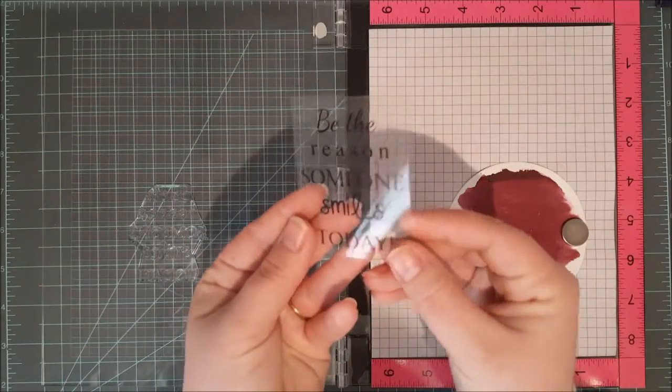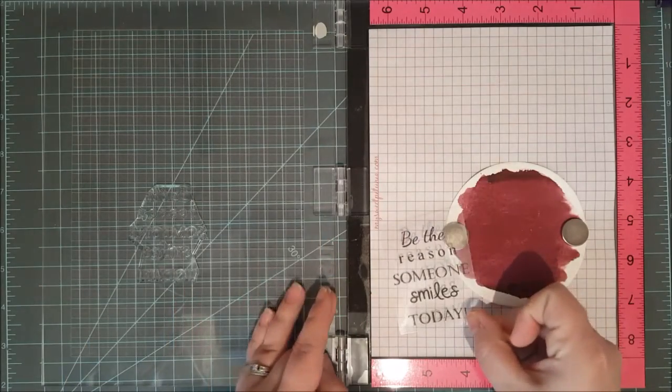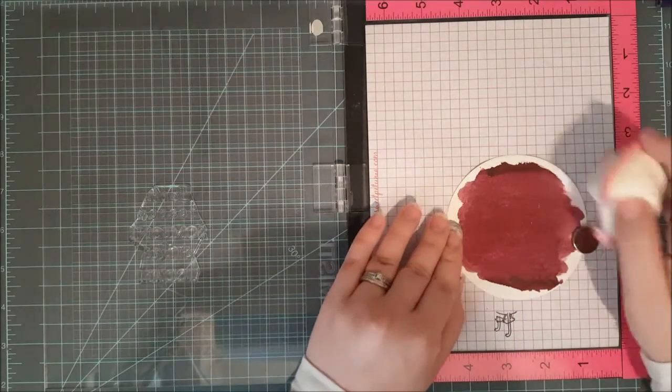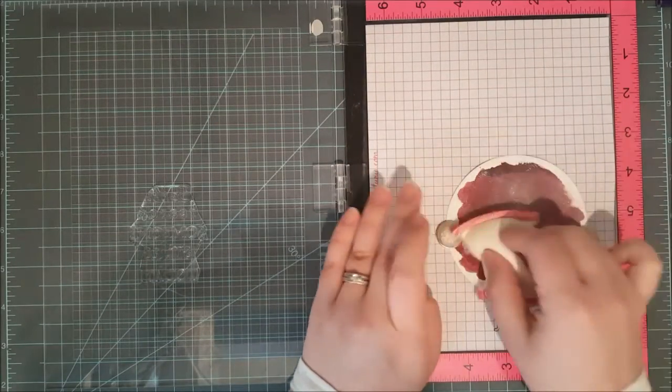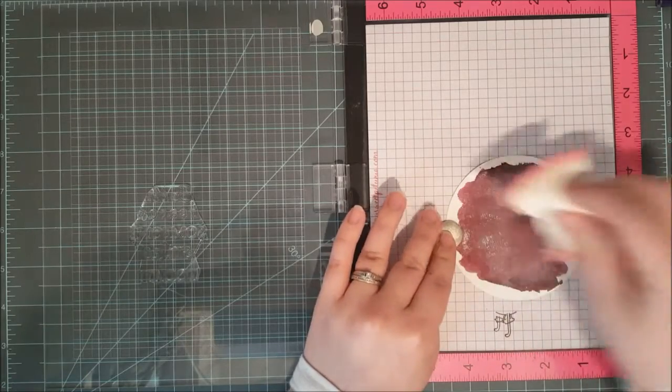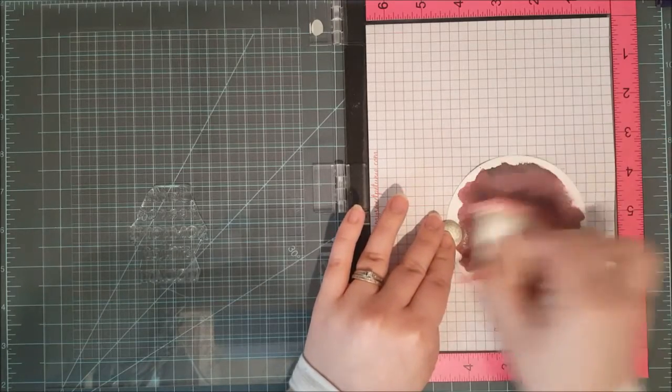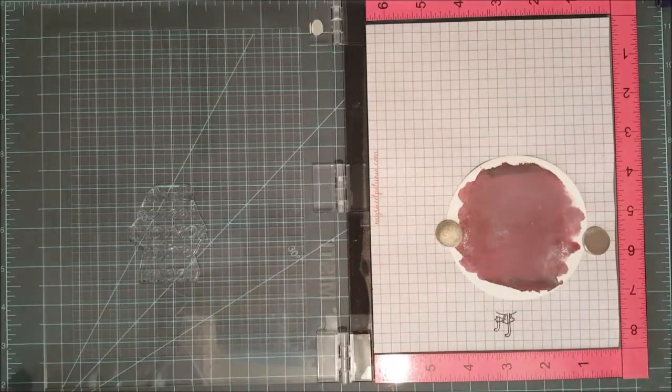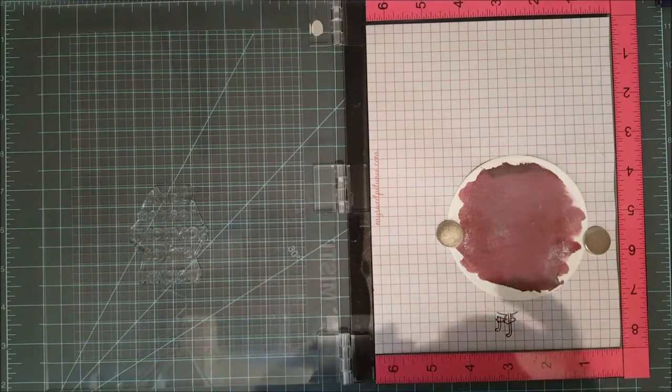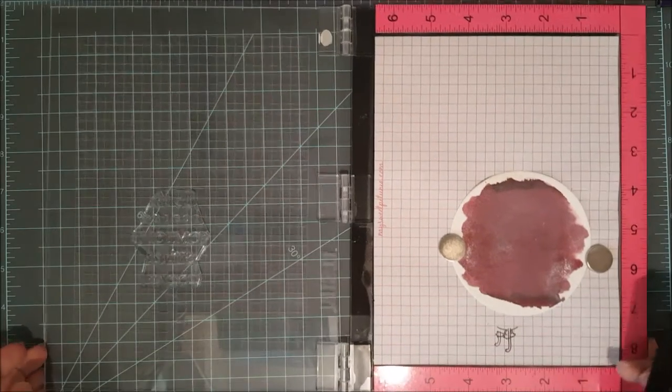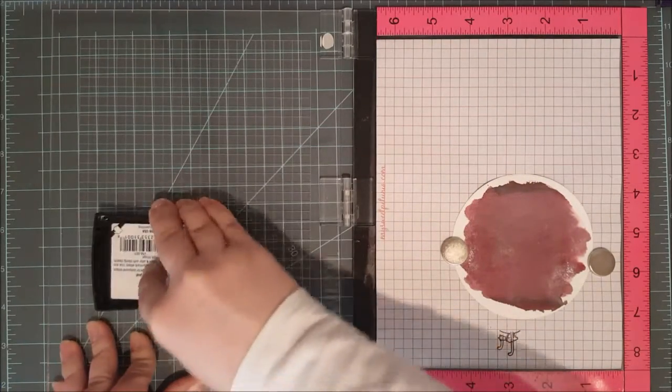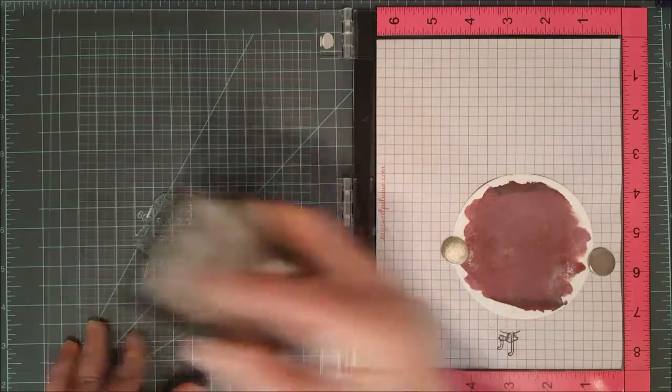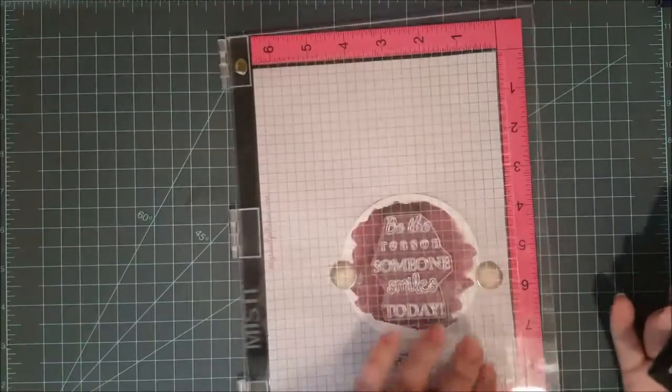Now I'm going to move on to my watercolor piece. I've got the Be The Reason Someone Smiles today sentiment. I love that sentiment. It's from Two Paper Divas, one of their new stamps. I'm going to take my embossing bag first and put that over my watercolor piece there just because I don't want any embossing powder to stick to the watercolor. I'll take my VersaMark ink again and ink up that sentiment there. I want to make sure that it's very well inked up.